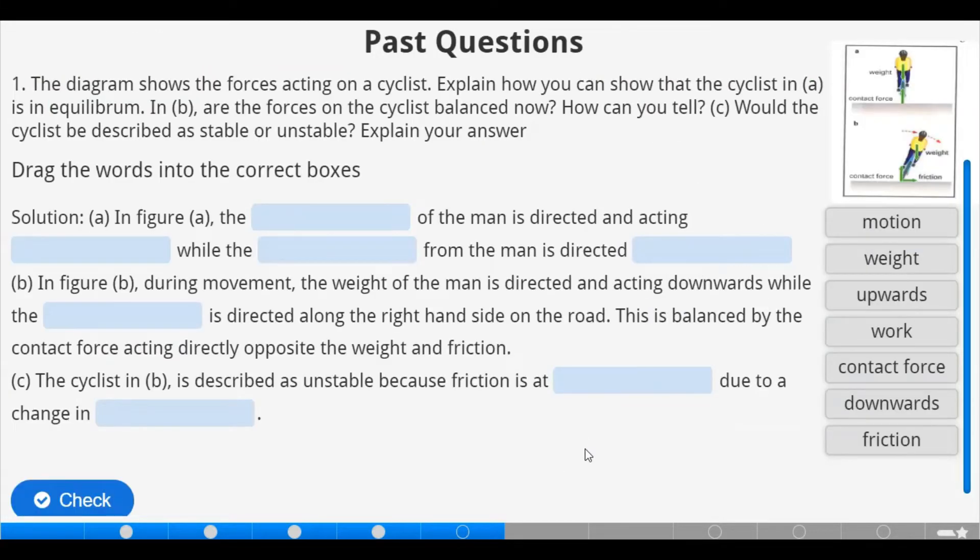Now let's deal with this past question. The diagram shows the forces acting on a cyclist. Explain how you can show that the cyclist in A above is in equilibrium. In B, are the forces on the cyclist balanced? How can you tell? Will the cyclist be described as stable or unstable? We have to explain our answer. So we look right at the figure which is on my top right corner here. We have figure A and figure B.